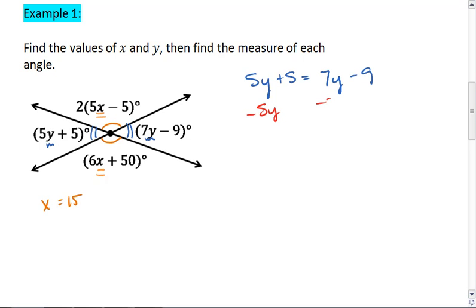And solve. Subtract 5y from both sides. Add 9 to both sides. Divide by 2. And we find that y equals 7. Lastly, the question asked is to find the measure of each angle. To do that, we simply substitute these values back in. Let's go ahead and substitute 7 for y into our right angle. Well, the right located angle, not the actual right angle.